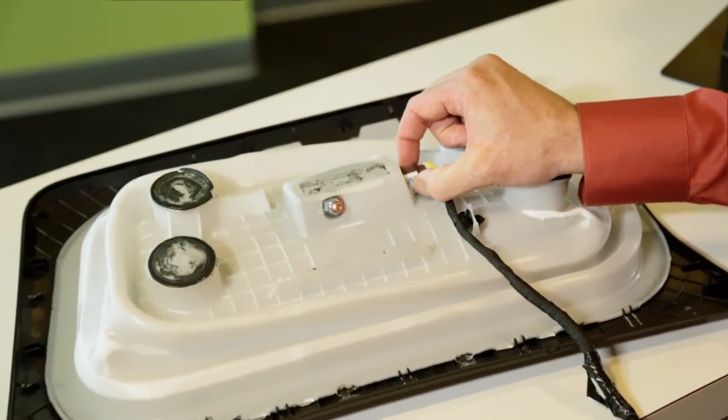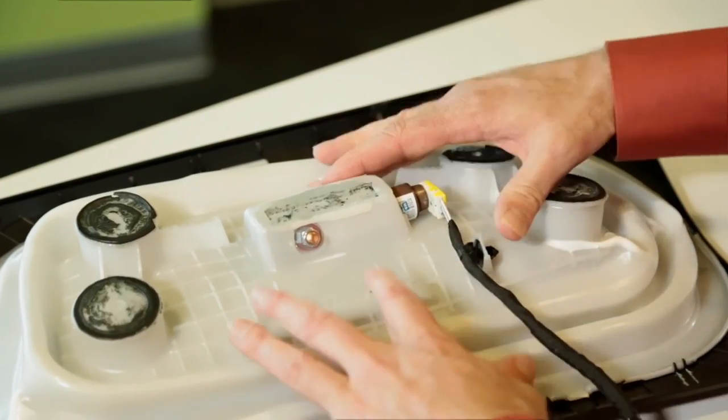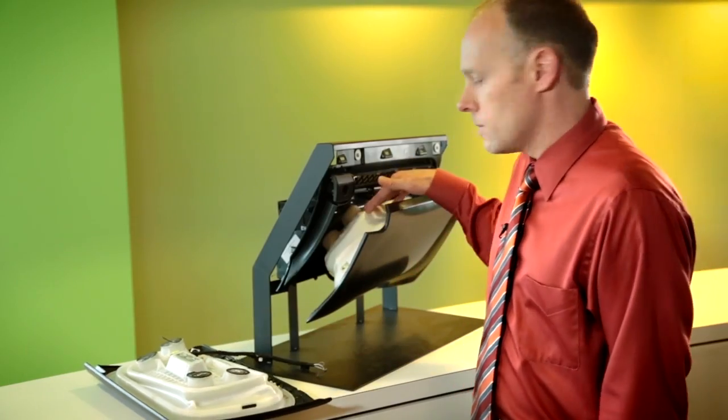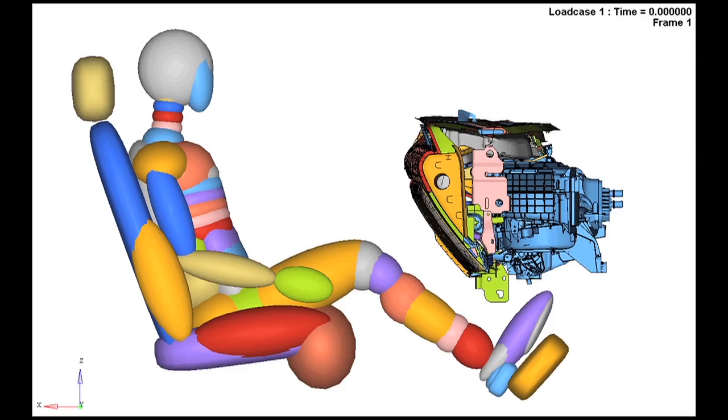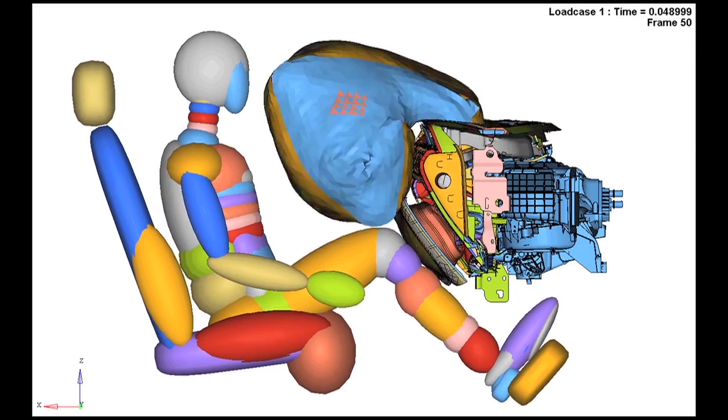There's a gas generator we call an inflator that's inside the bladder, generates gas, inflates this bladder as shown here. This is in the deployed state, pushes the door out so it can serve the function of an airbag.